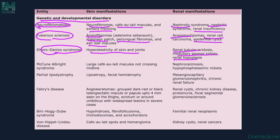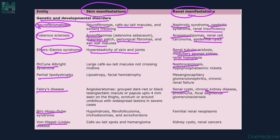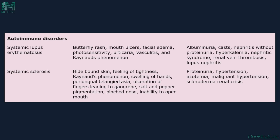We also have other genetic manifestations like McCune-Albright syndrome, partial lipodystrophy, Fabry's disease, Birt-Hogg-Dubé syndrome, and Von Hippel-Lindau disease. All of these can be associated with certain skin manifestations as well as renal manifestations. Renal involvement is mostly in the form of nephrotic syndrome, nephrocalcinosis, renal cysts, chronic kidney disease, and renal neoplasms or renal cancers.